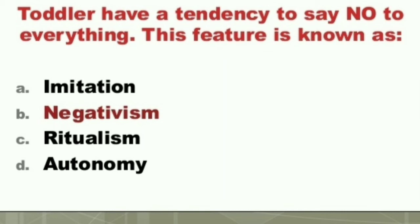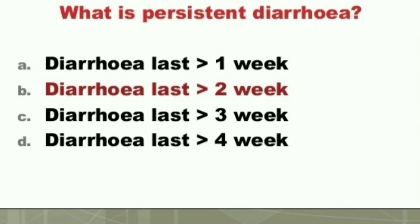Question: What is persistent diarrhea? A) Diarrhea lasting more than one week, B) More than two weeks, C) More than three weeks, D) More than four weeks. The correct answer is B) Diarrhea lasting more than two weeks.